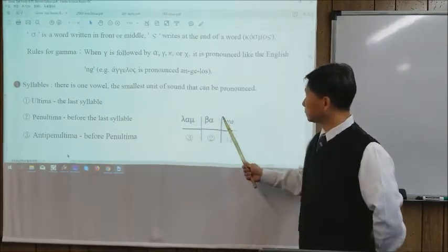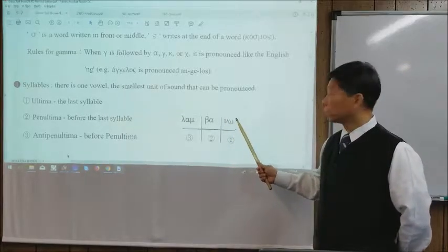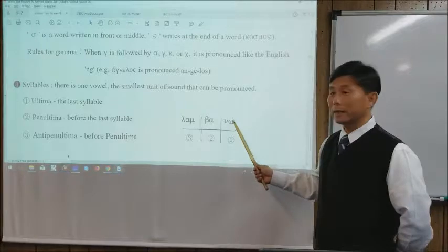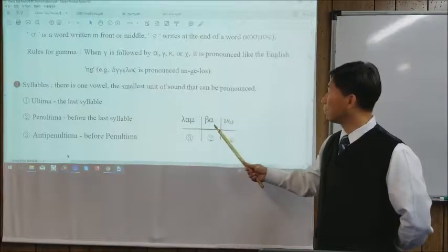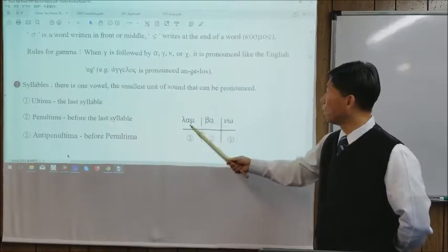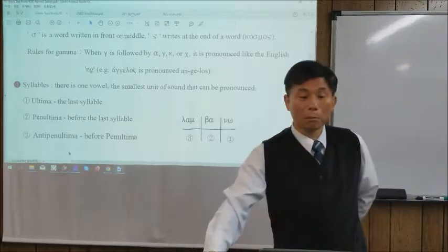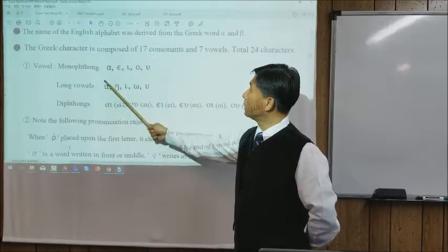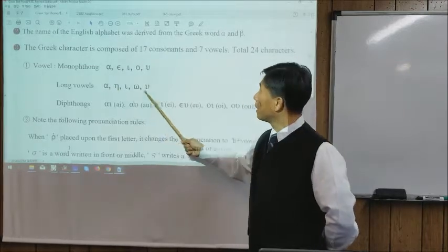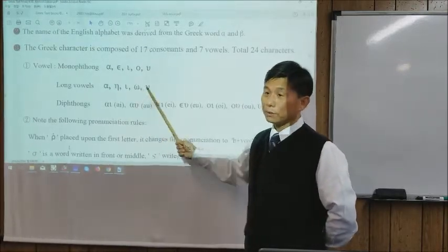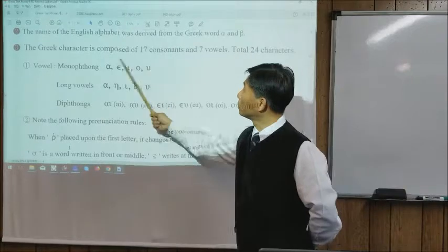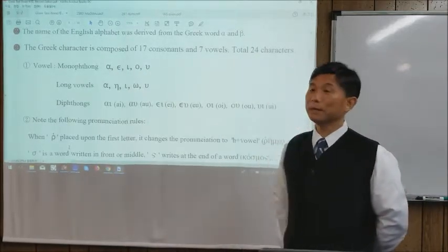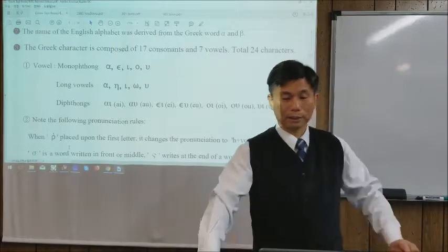So even though both syllables have the same alpha, the first alpha is monotone (short vowel), and the second alpha is a long vowel. The last syllable ends with omega, which is a long vowel. When alpha is in a closed syllable, it is a short (monotone) vowel.